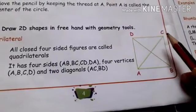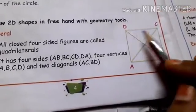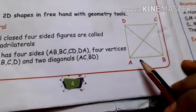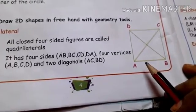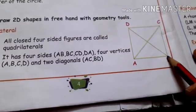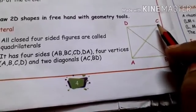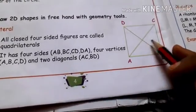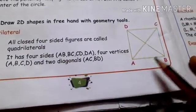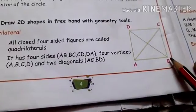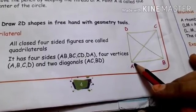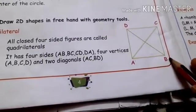A four-sided closed figure — what is this? A square. So a square means a quadrilateral. In the closed-side figure, draw the square by joining the corner points. Here, four sides means: side AB, side BC, side CD, and side DA — that is four sides. The vertices are the corners.